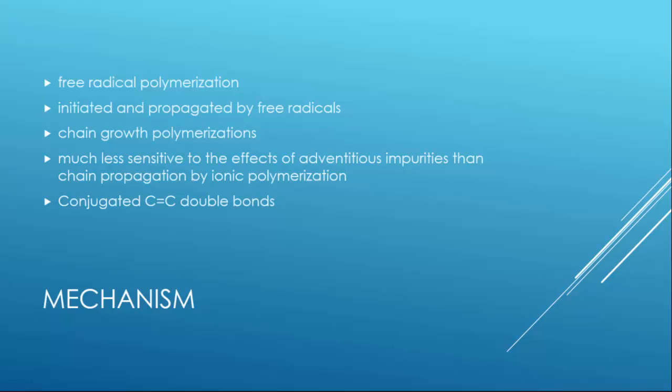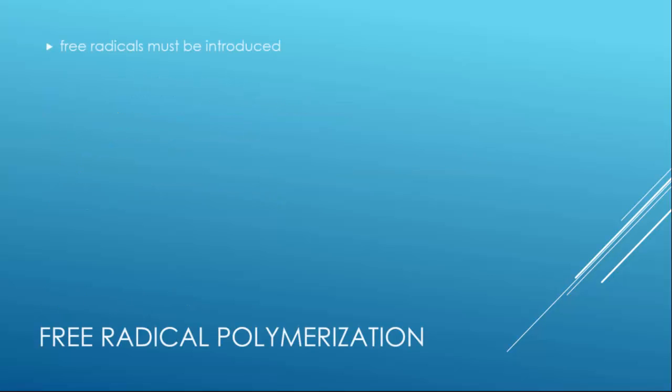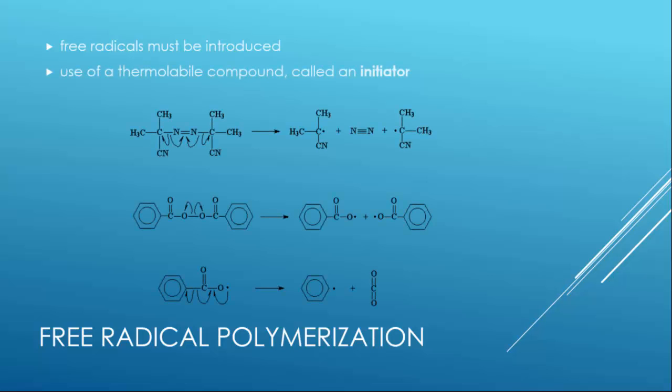To set off this free radical polymerization, the free radicals must be introduced to the system, because those radicals can't be generated from themselves by the monomers. This is accomplished by the use of a thermolabile compound called an initiator, which decomposes into free radicals. These radicals attack the monomer molecule giving the oligomer radicals. The radicals attack the neutral molecule giving a longer chain radical, and this process continues until the polymer of high molecular weight is formed.